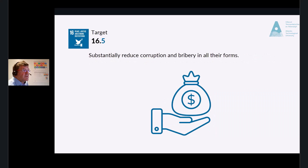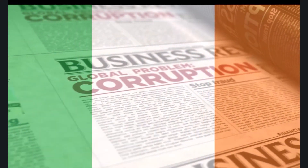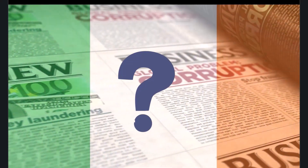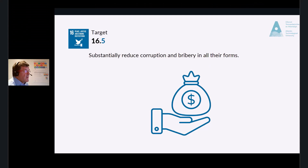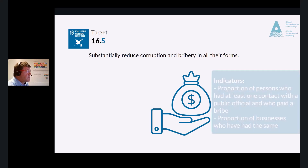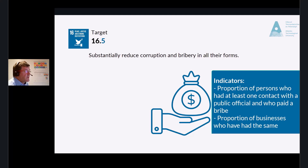Target 16.5: Substantially reduce corruption and bribery in all their forms. On a global scale, we simply cannot reach any form of equality or equity when we have high levels of corruption. The indicators are the proportion of persons who had at least one contact with a public official who paid a bribe, and the proportion of businesses that had at least one contact with a public official that paid a bribe.